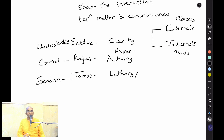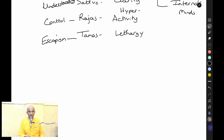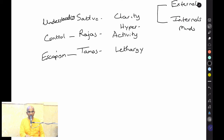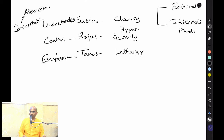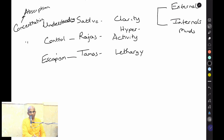Generally we associate Tamas or Rajas with distraction. Each mode has its pattern: Sattva is generally associated with concentration that gradually moves toward absorption. Concentration is more effortful, absorption is more effortless. But even in Rajo Guna, concentration and absorption can occur — their purpose is different, aimed at control or enjoyment. Rajas can also produce distraction when too many desires pull simultaneously.